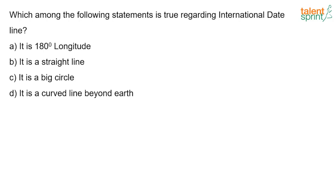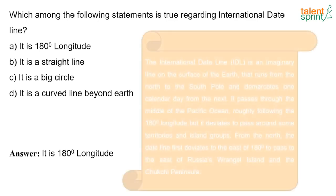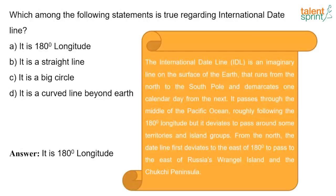Which of the following statements is true regarding the International Date Line? The answer is: it is 180-degree longitude. The International Date Line is an imaginary line on the surface of the earth that runs from the north to south pole and demarcates one calendar day from the next. It passes through the middle of the Pacific Ocean, roughly following the 180-degree longitude, but deviates to pass around some territories and island groups.